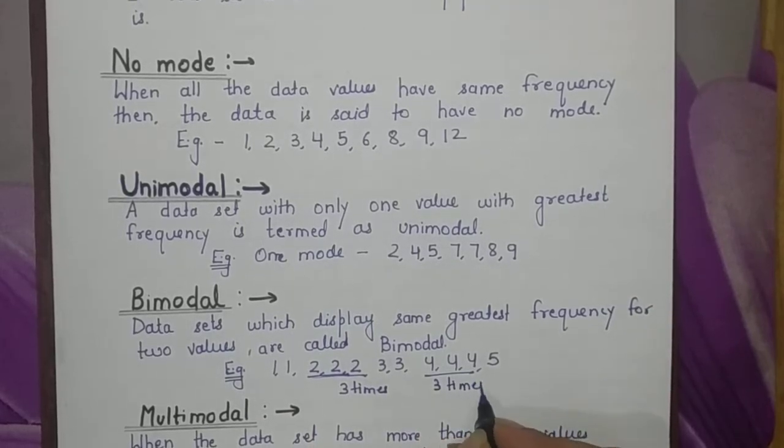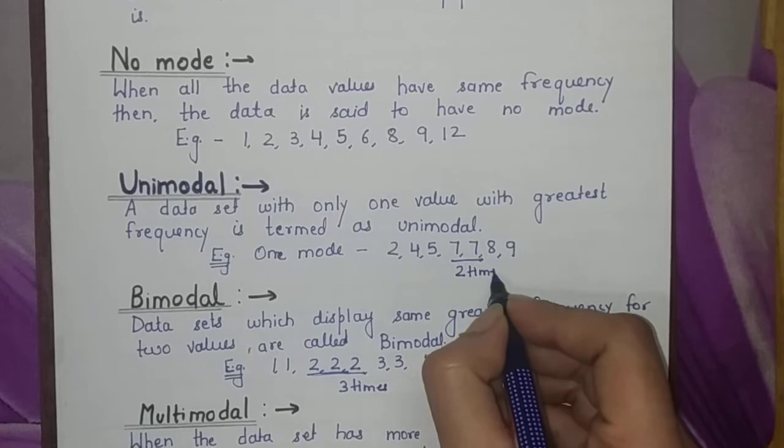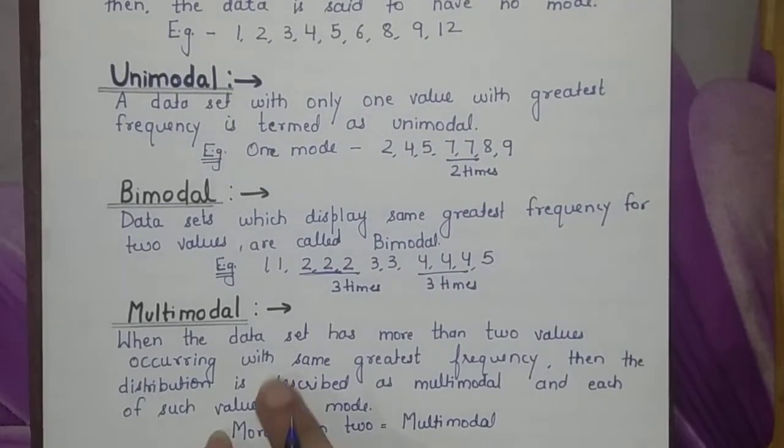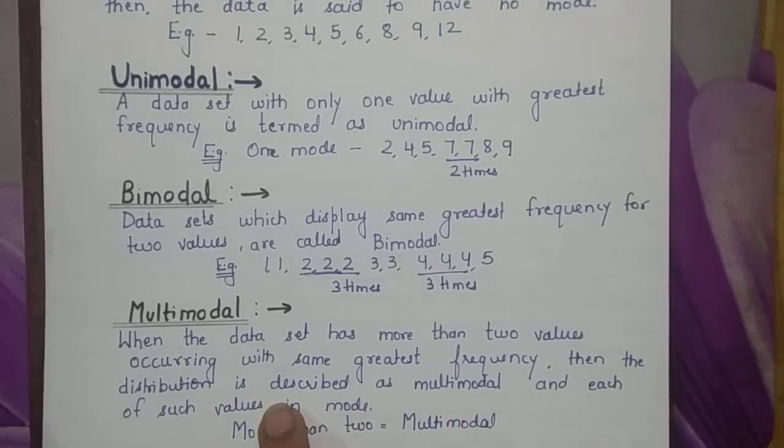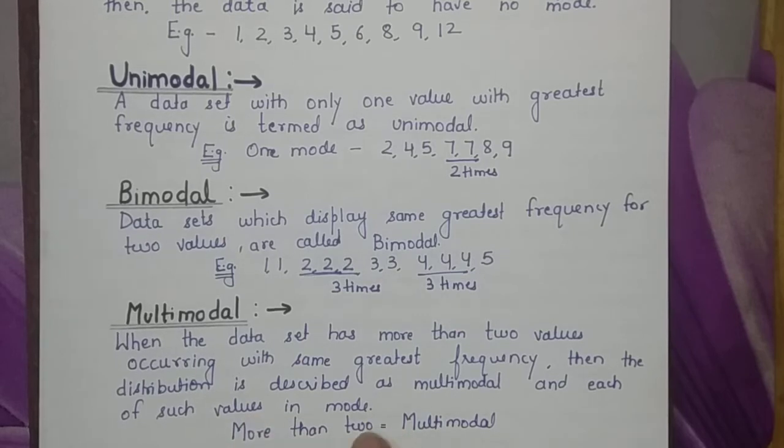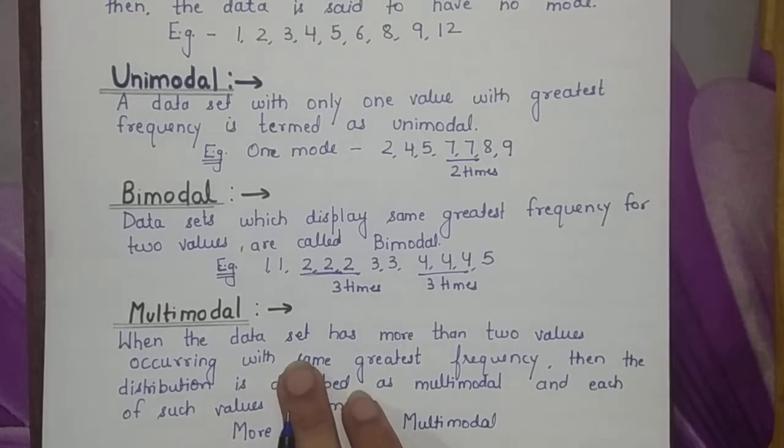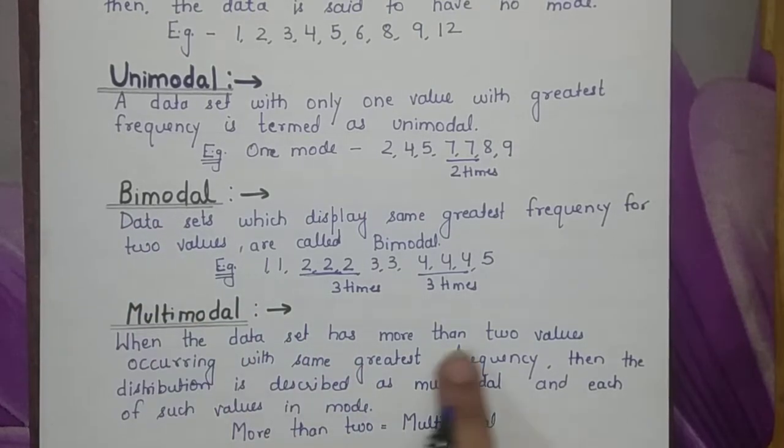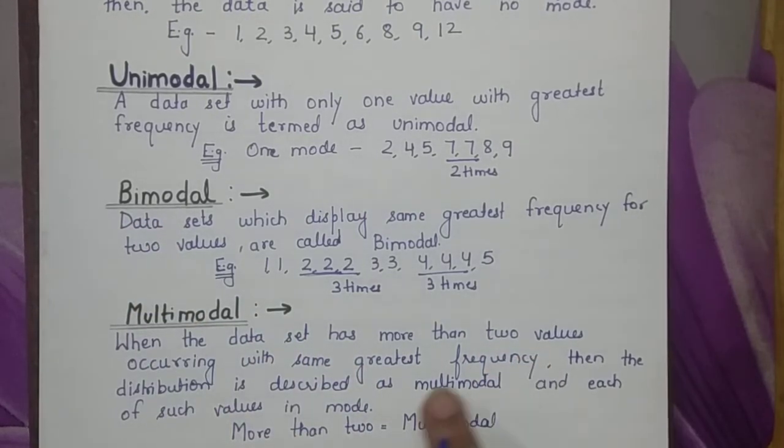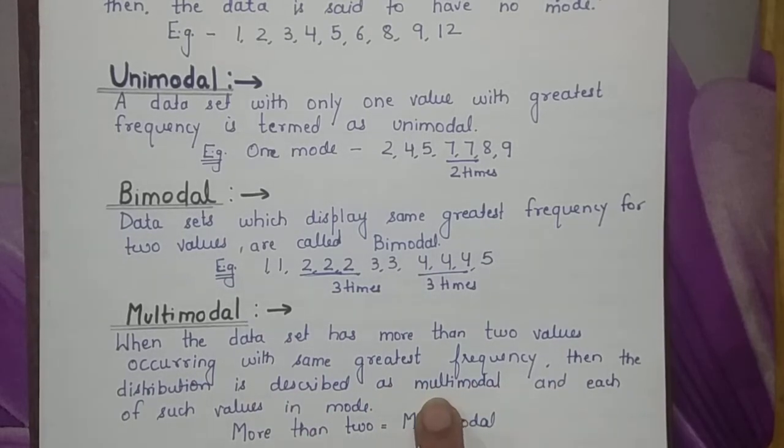Multimodal - when the data set has more than two values occurring with the same greatest frequency, then the distribution is described as multimodal and each of such values is a mode. Where there are more than two values with the greatest frequency, we describe that data set as multimodal because it has more than two modes.